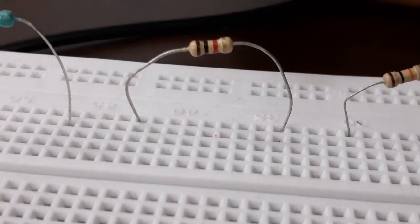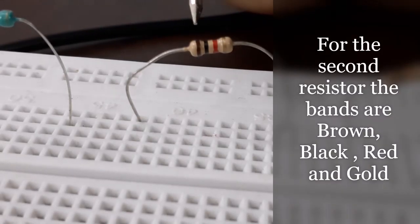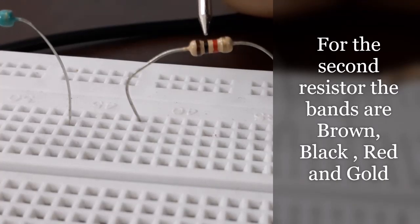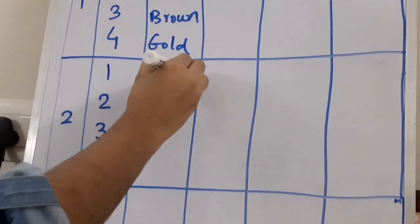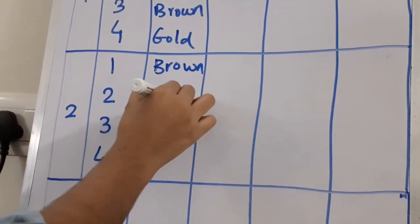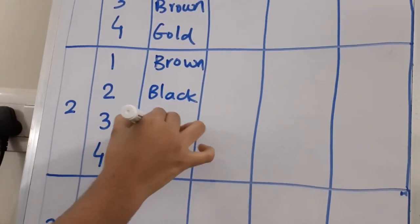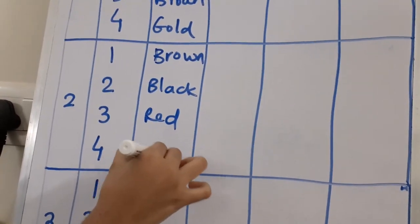Now let us start with the second resistor. First one is brown, second band is black, third one is red, and the fourth one is gold. For the second one: brown, black, red, and gold.